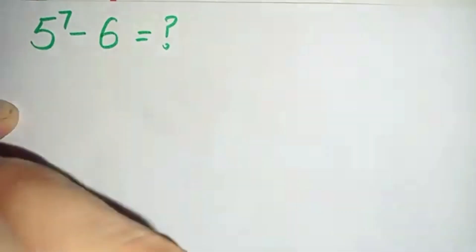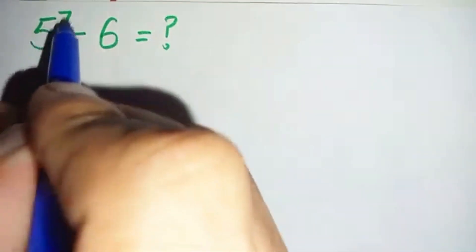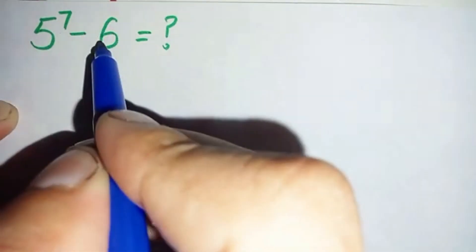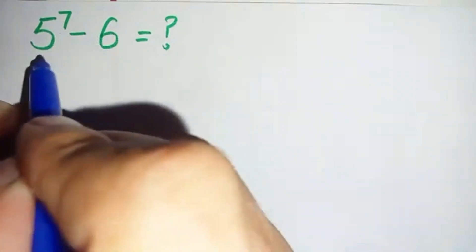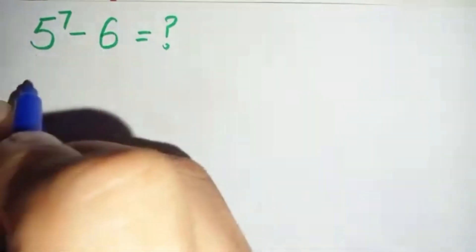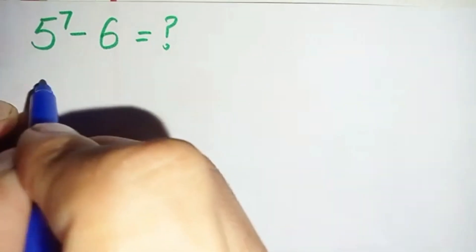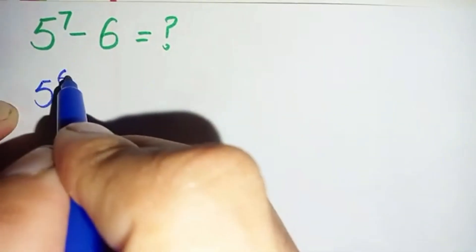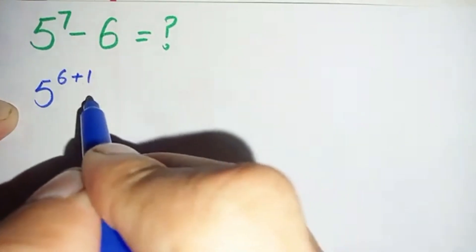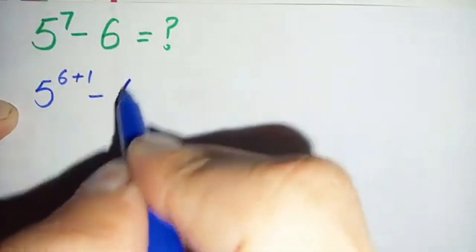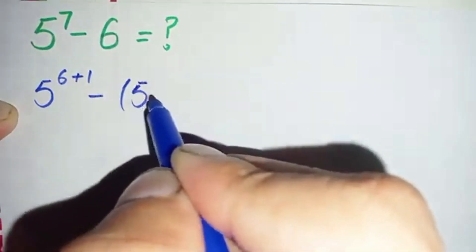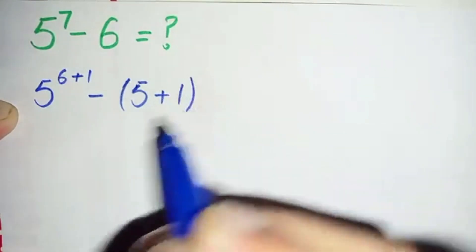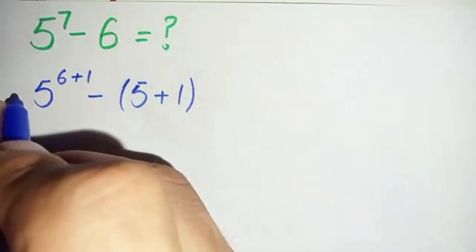First of all, we will change this 7 to the sum of 6 plus 1, and we will change this 6 to the sum of 5 plus 1. So this will become 5 raised to power 6 plus 1, minus 5 plus 1.